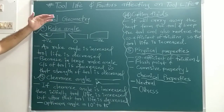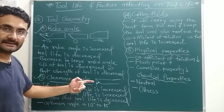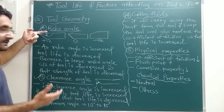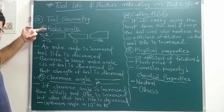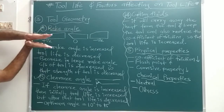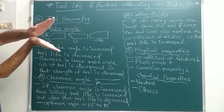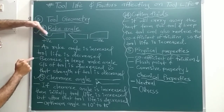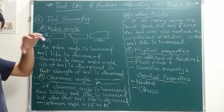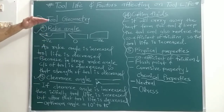The next factor is tool geometry, which is also a very important factor. In tool geometry, generally two types of angles are considered: the rake angle and the clearance angle. If we increase the rake angle, tool life is decreased. The rake angle is the angle between the face and the cutting edge. If you increase the rake angle, this line comes nearer to the flank, so the cross-sectional area of the cutting tool is decreased. If cross-sectional area decreases, strength of the tool decreases and the tool breaks — so tool life is decreased.